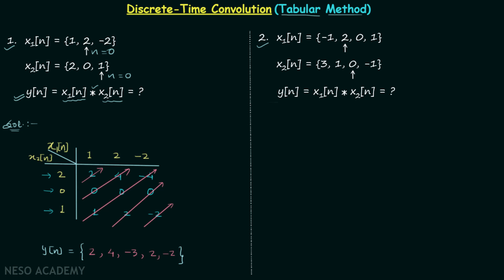To find the element at n equals 0, we locate the n=0 elements of x1n and x2n. x1n has 2 at n=0 and x2n has 1 at n=0. We draw a vertical line through 2 and a horizontal line through 1 — their intersection gives us 2 in the table. After diagonal addition including this element, we get 2. So yn equals 2 when n equals 0. This is our final answer for the first example.